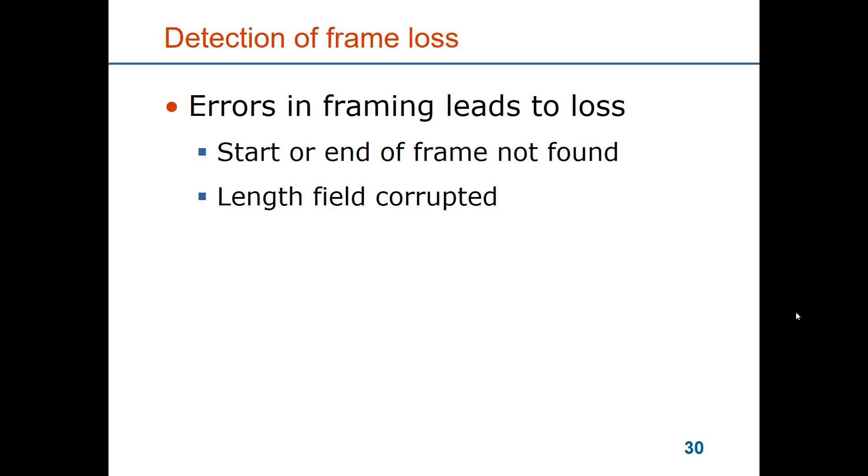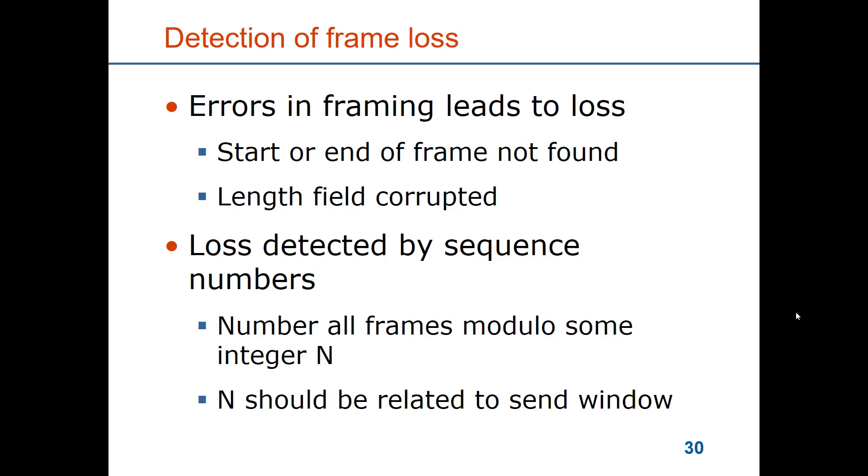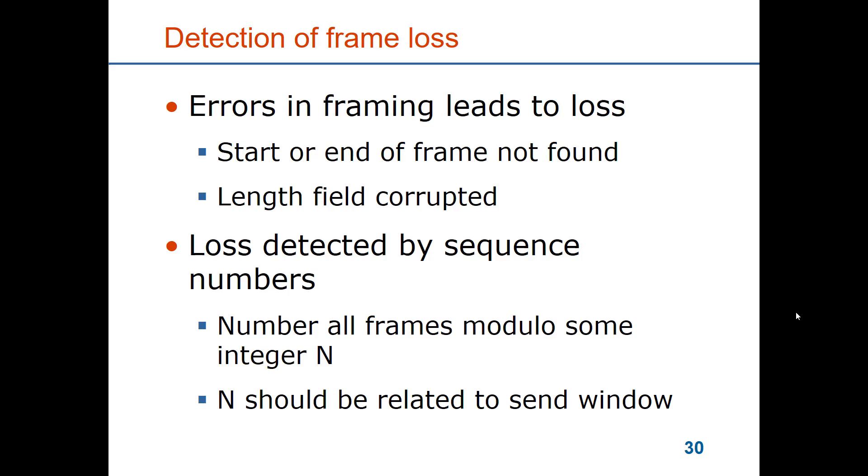But there could be whole frames being lost. So how do you detect that? We can do that by sequence numbers. So for the correctly received frames where we have verified by a CRC that they are correctly received, we can include a protocol field which is the number. And then we can simply see that the number should monotonically increase up to the highest number, and then it should wrap around.